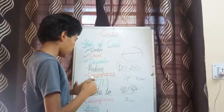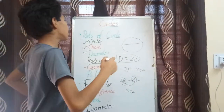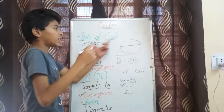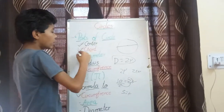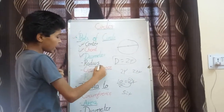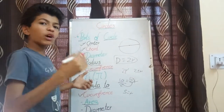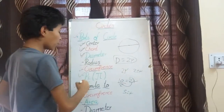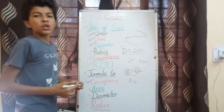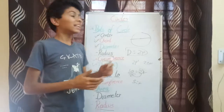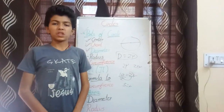So friends, what did we learn today? In this chapter — parts of a circle — we covered: center, chord, diameter, radius, circumference, the value of pi, the formula to find circumference, area, diameter, and radius. I hope this video was helpful to you. Thanks for watching.